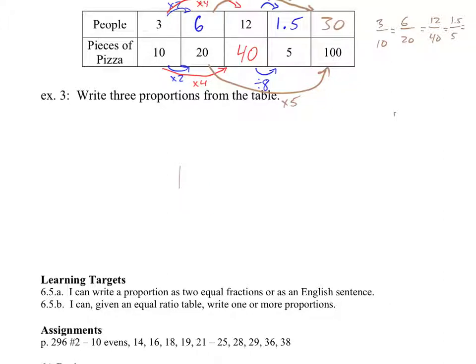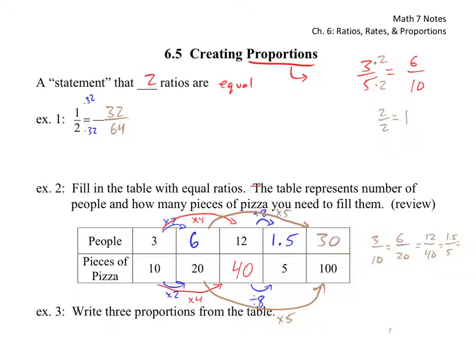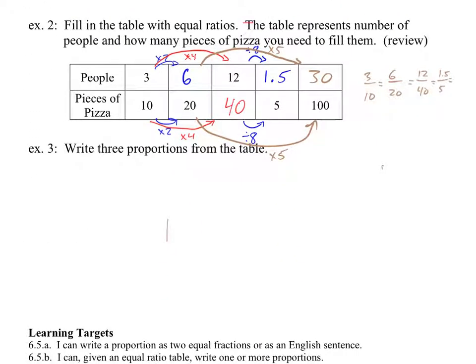So what I would write then is they say write three proportions. Going back up to the top, a proportion is going to be a fraction equals a fraction. So somebody just give me one of these fractions in here. So we'll say 3 tenths equals, what's one other fraction that 3 tenths could equal? 6 over 20. So that would be one possible proportion.